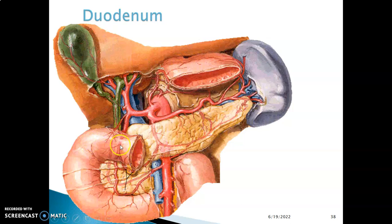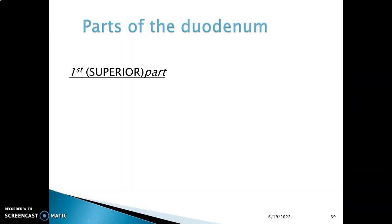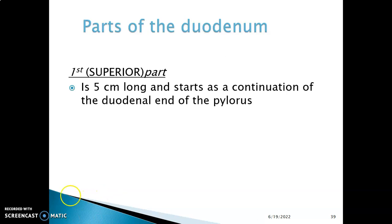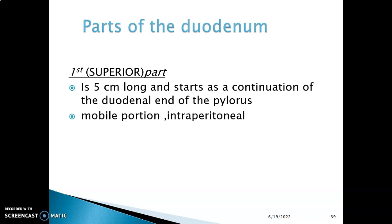The first part of the duodenum is the superior transverse portion. It's five centimeters long and usually starts as a continuation of the pylorus — the duodenal end of the pylorus. This portion is mobile and intraperitoneal.